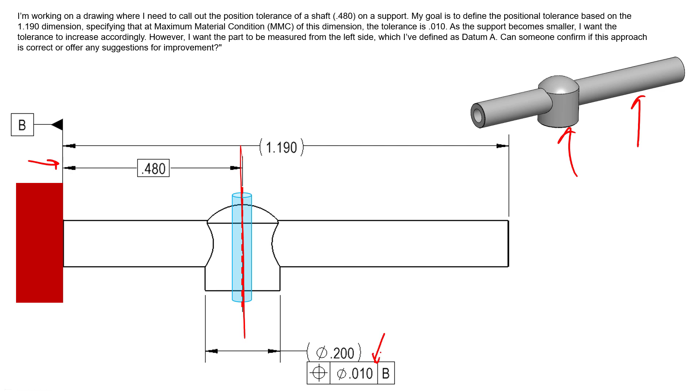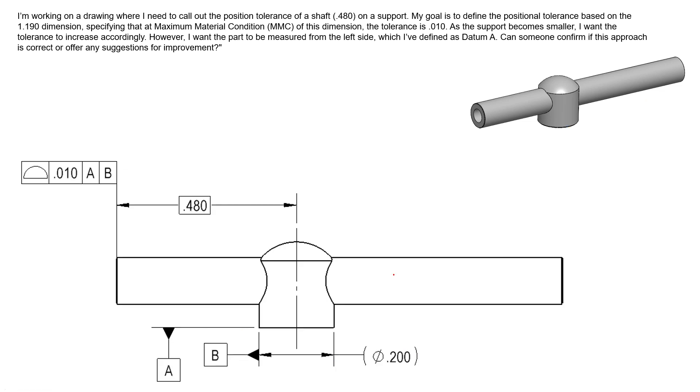One other opportunity would be to use profile of a surface to locate this surface with respect to this post. Now you'll notice we have identified Datum Feature A as the bottom surface of our support and Datum Feature B as the axis of that support. And so now we can sort of define the zero—where we want this surface to be located from. And so we can see that we are perpendicular to A and located to B with this tolerance zone, and the width of this tolerance zone is 0.010. So we're basically controlling the location of this surface with respect to this datum axis and the orientation with respect to Datum A to plus or minus 0.005.